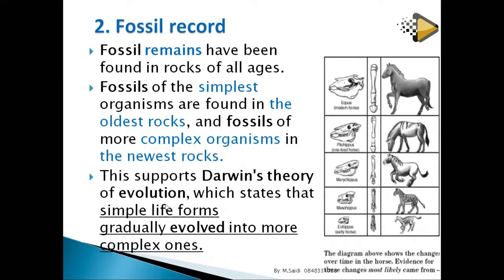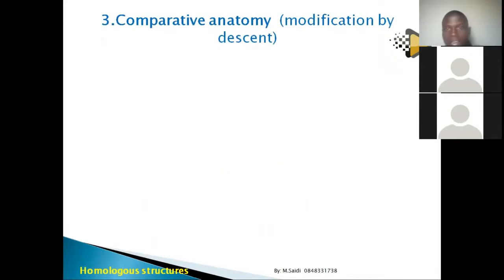This supports Darwin's theory of evolution, which states that simple life forms gradually evolve into more complex ones. You are more complex than your parents, which means you evolved from simpler to more complex organisms.